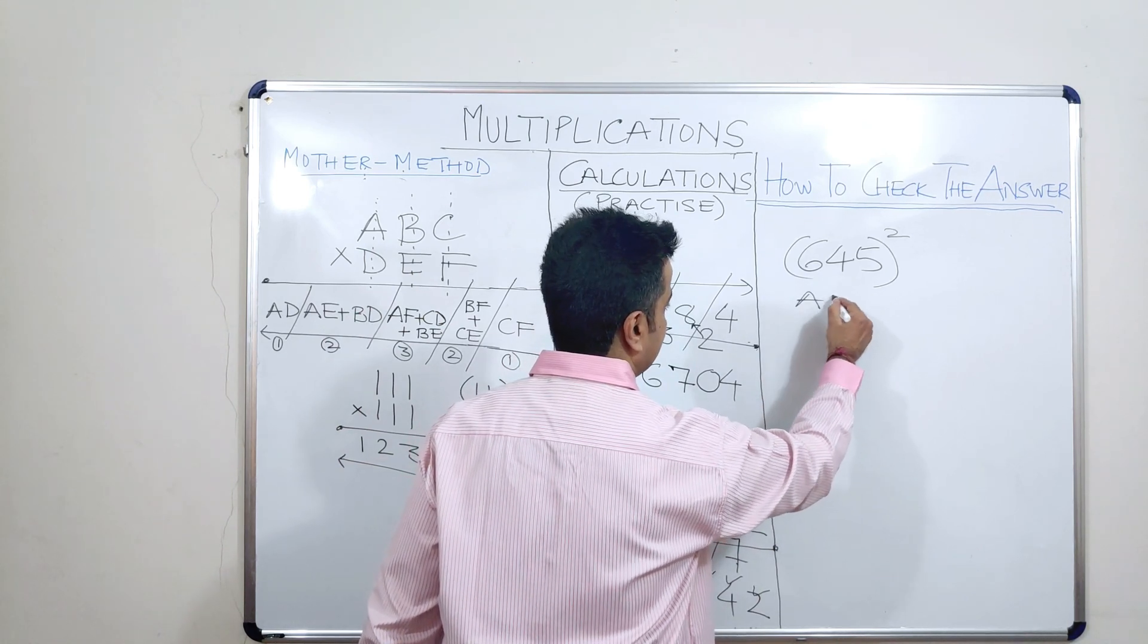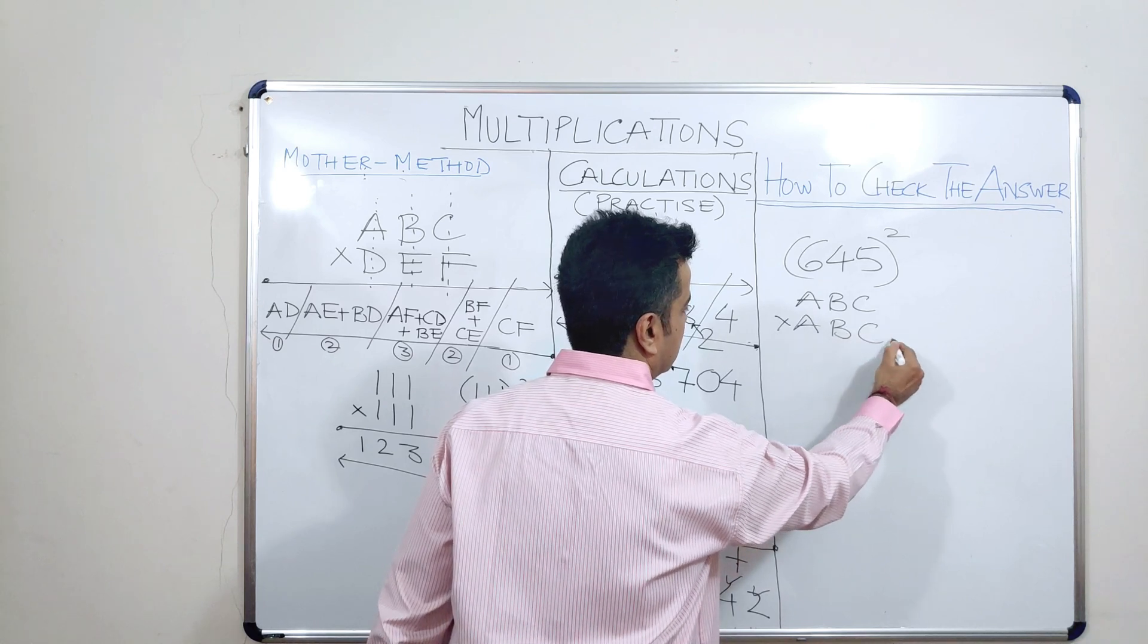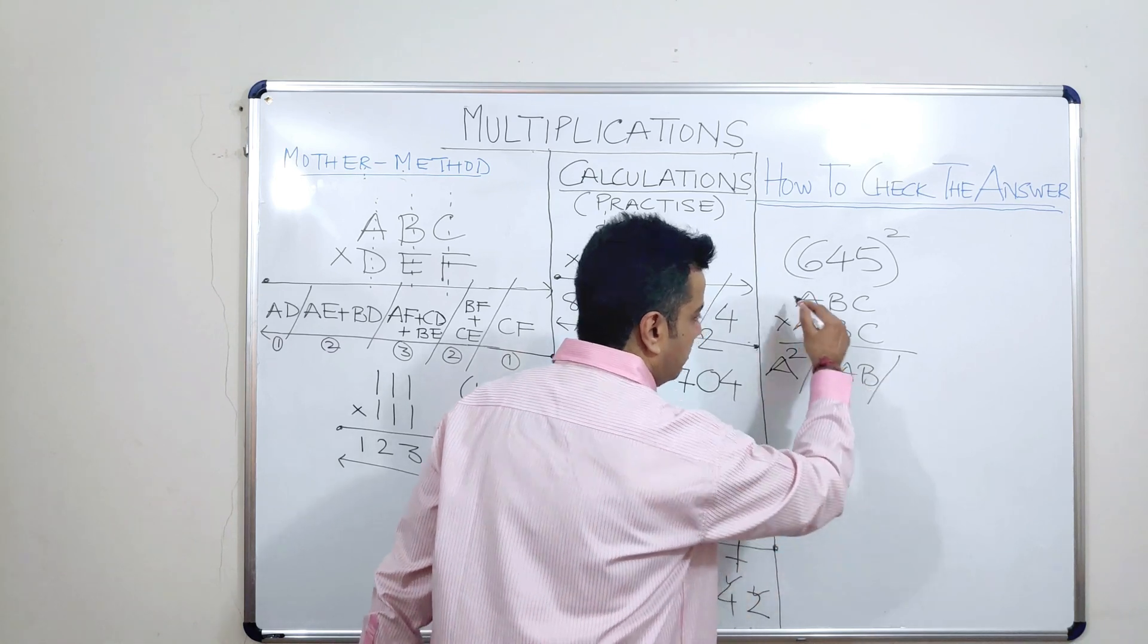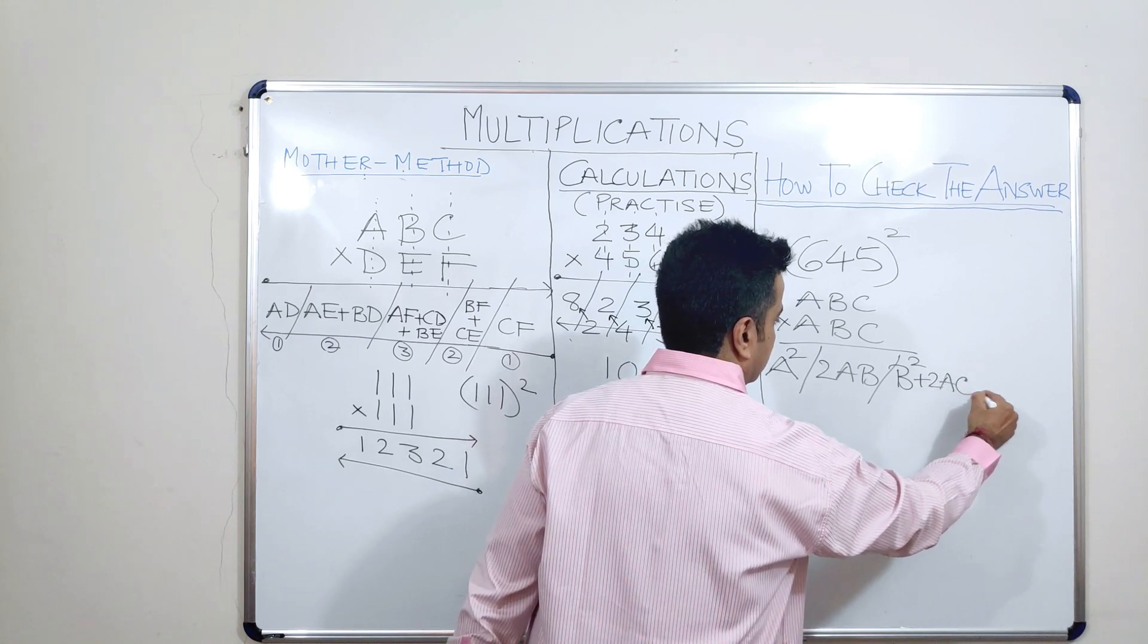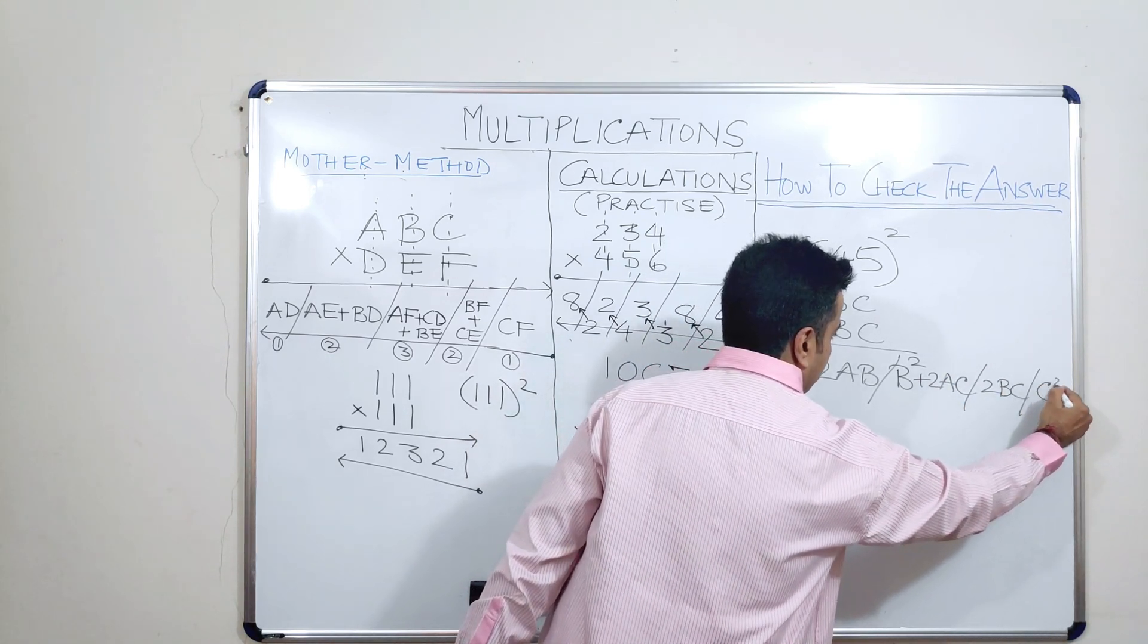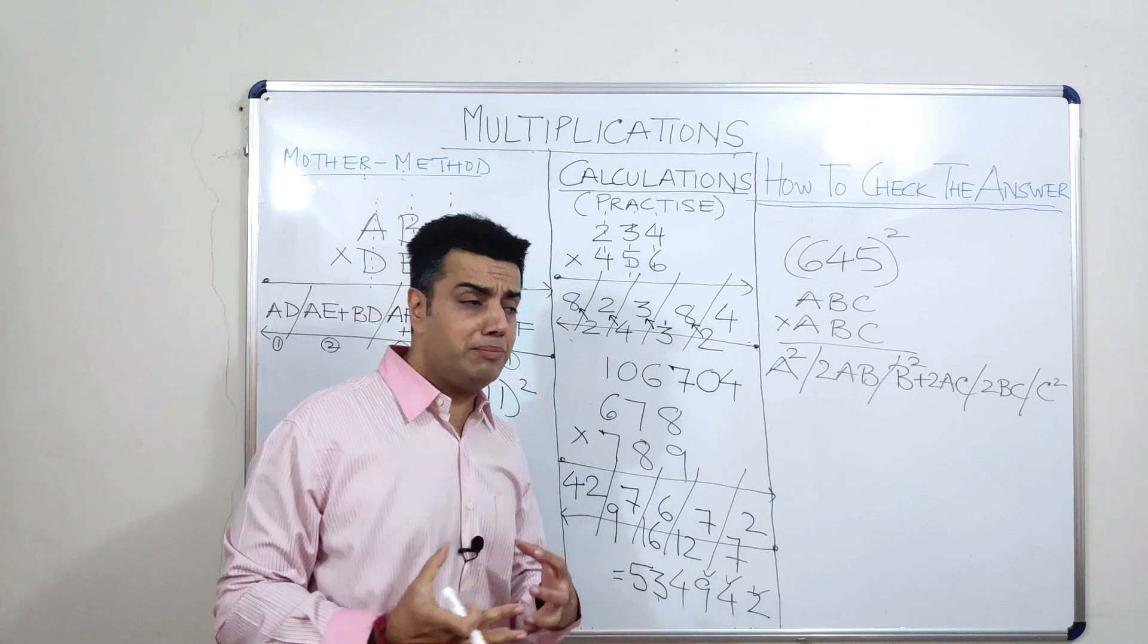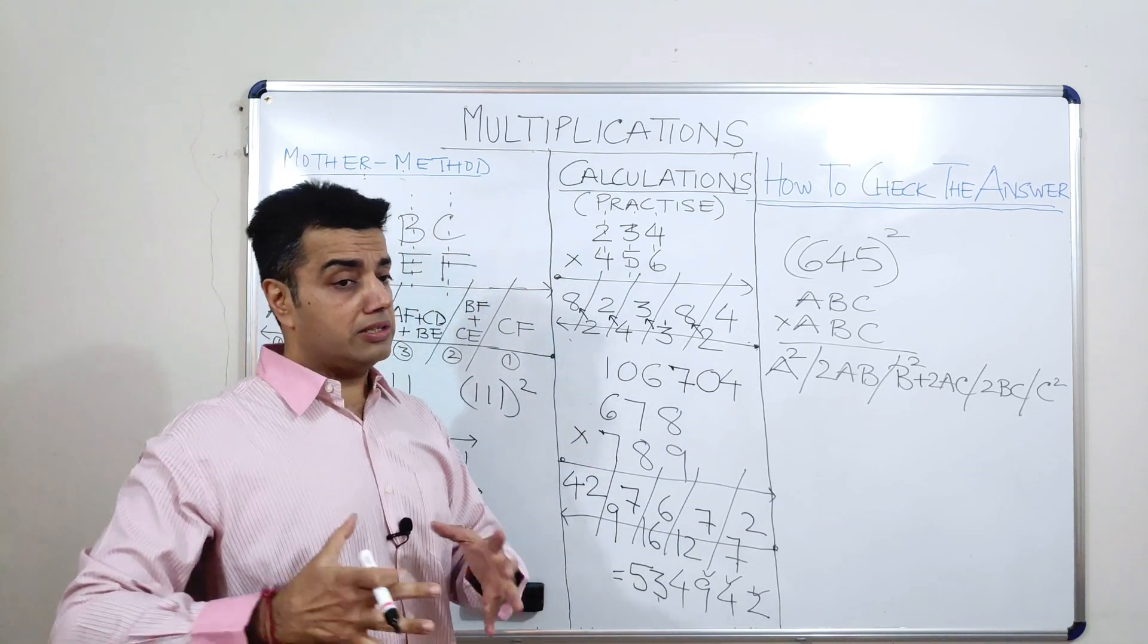So, in this case, it is just like saying an ABC multiplied with another ABC. So, what will I get? I will get A square followed by 2AB. Followed by what? Followed by B square plus 2AC. Followed by 2BC. Followed by C square. Please refer to my video on three digit squares.